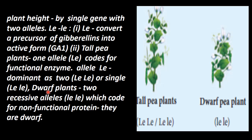Whereas dwarf plants — these alleles are recessive. Both the alleles are recessive, that is small LE and small LE. This codes for a non-functional protein, so Gibberellin cannot be converted into its active form. This codes for a non-functional protein, so the plant is dwarf.